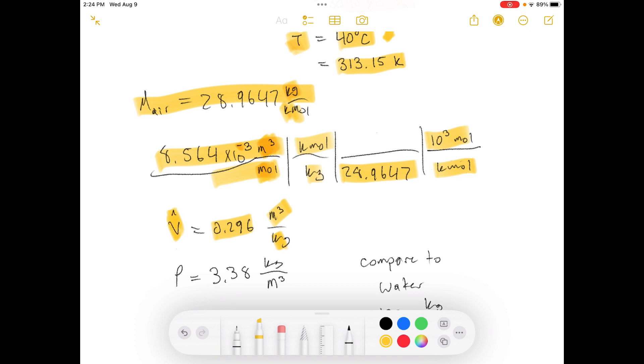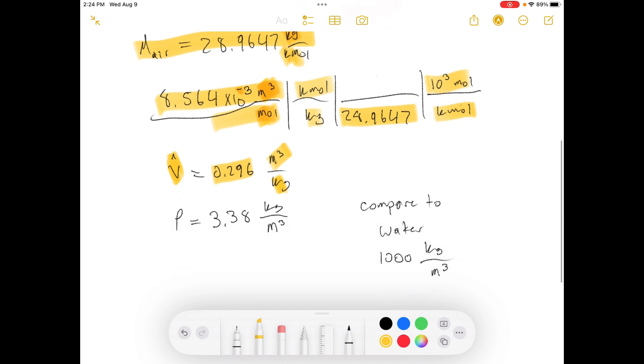That's what the little carrot is. If you invert that, one over this value, you get the density. And that's what they asked for, the density in kilograms per meter cubed. So that's 3.38.